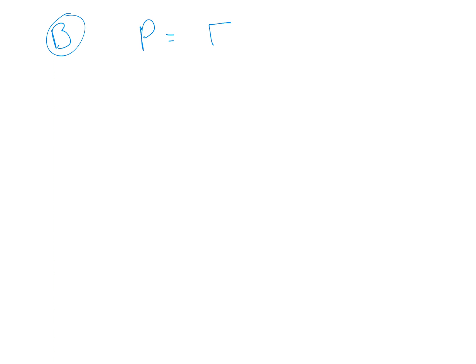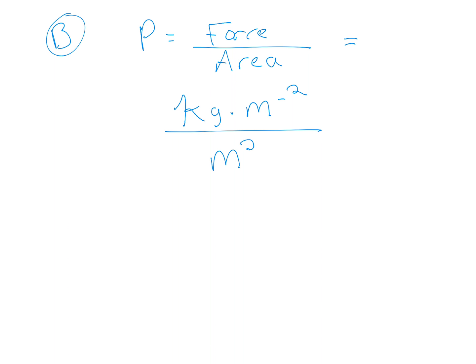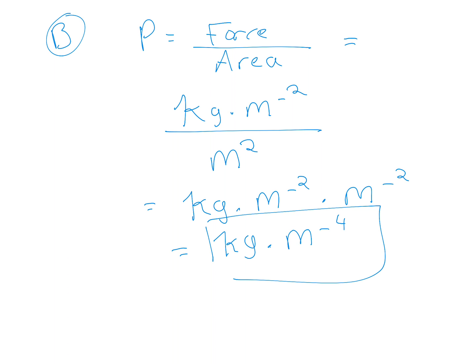Pressure is force over cross-sectional area. Force is kg m s⁻², which we can write as kg m⁻² in this context, and area is m². So we get kg × m⁻² × m⁻² = kg m⁻⁴. This gives us the SI base units for pressure.